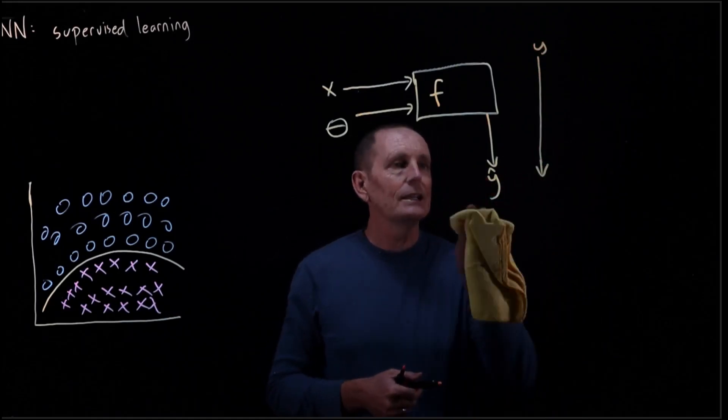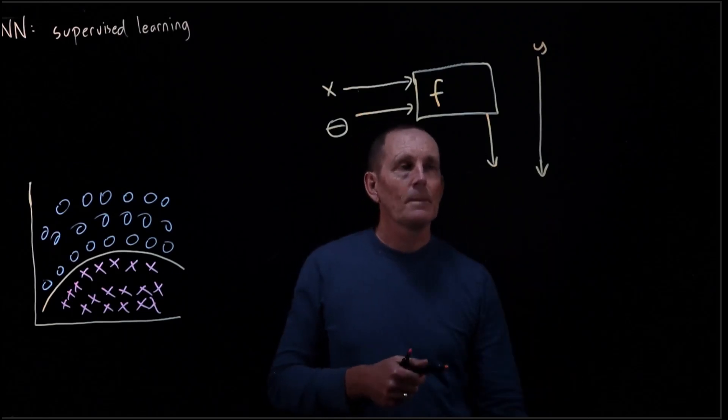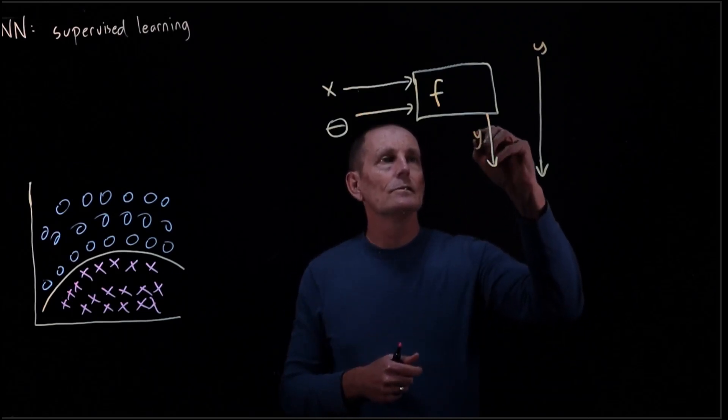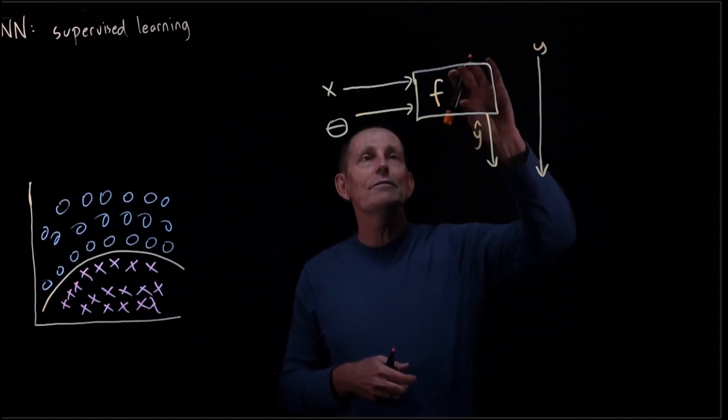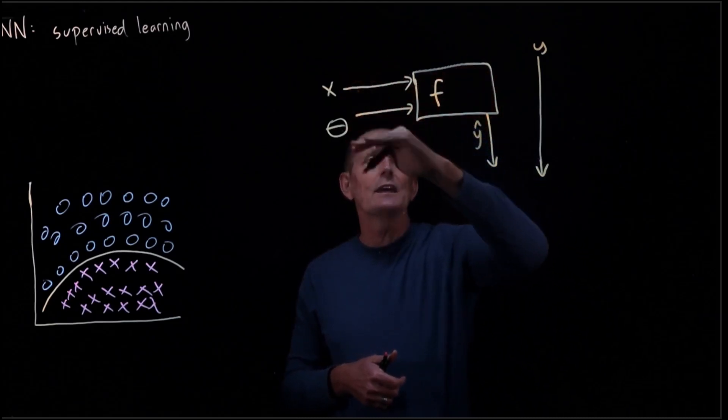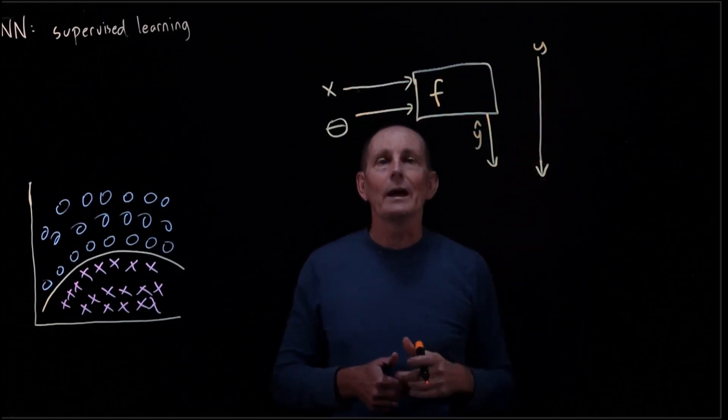Let's relabel this slightly. So we've got F that gets computed on X and theta. It comes up with our Y-hat. We've got our Y.